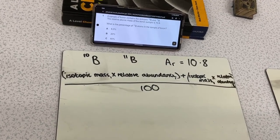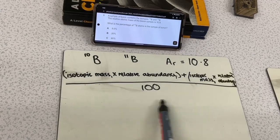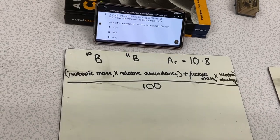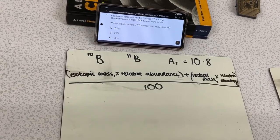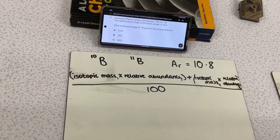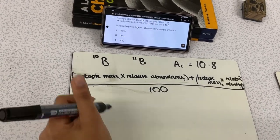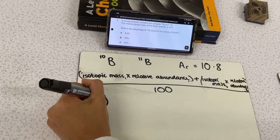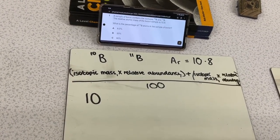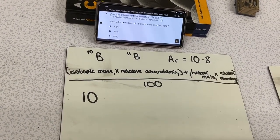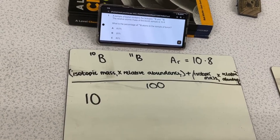First we need to look at the equation to find the relative atomic mass. This is our equation. Now we need to substitute our numbers given in the question into the equation. So first, the isotopic mass of the first isotope, and that is 10. Now we have to find the relative abundance of our first isotope. We don't know this, so we're going to label this x.